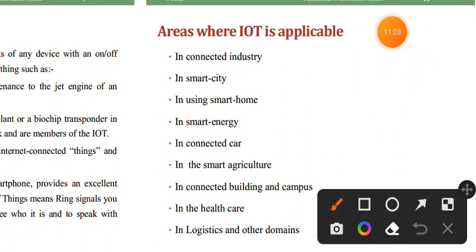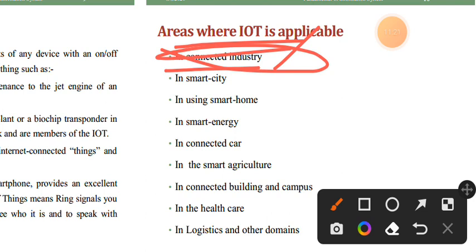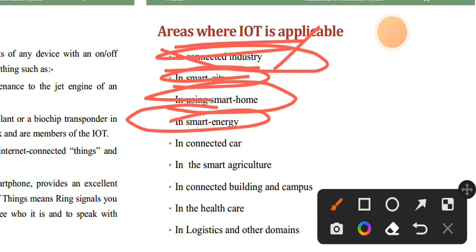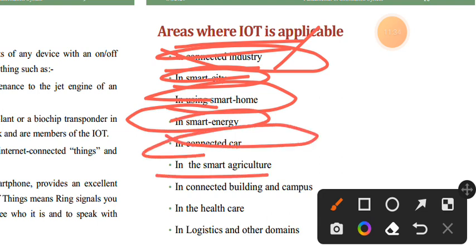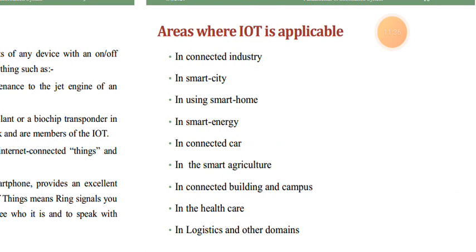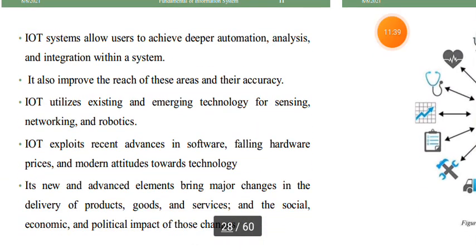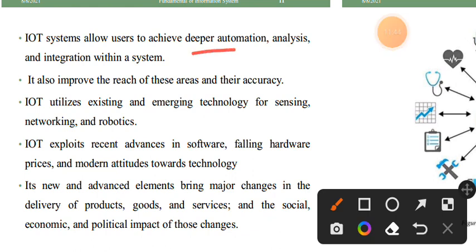IoT has many application areas. Connected industrial systems, smart cities, smart markets, online shopping, smart homes, smart energy and economy, connected cars, and smart agriculture are all application areas of IoT. IoT systems also enable automation, analysis, and integration across these sectors.